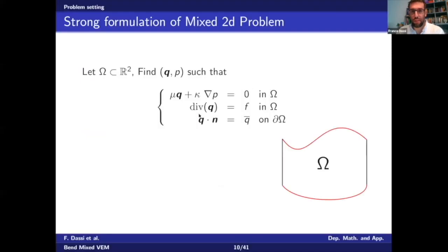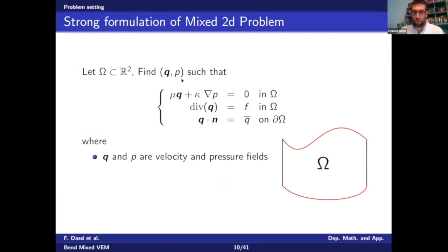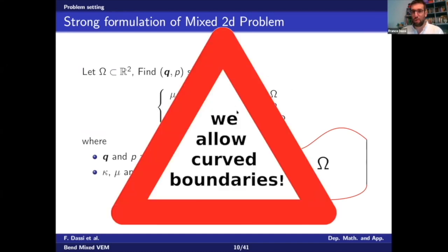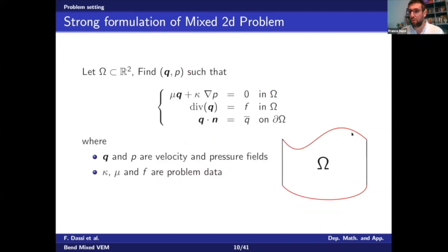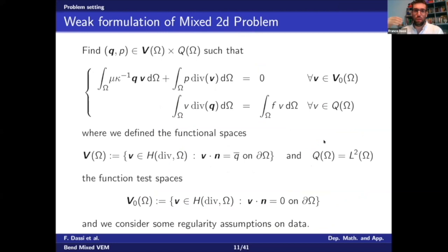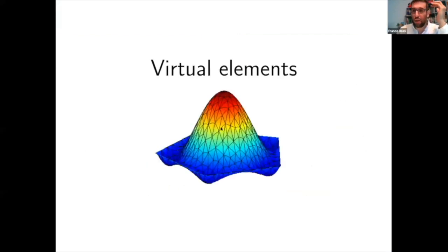The problem setting: this is the standard mixed problem. The unknown is the velocity that we call q and the pressure that is called p. We are looking for the velocity and pressure fields. There are some functions that define the physics of the problem — that is the coefficient mu k and the external forces. The novelty is that now we would like the boundary of our domain to be curved, as you can see from this picture. We do the standard setting to make the weak formulation of this stronger problem.